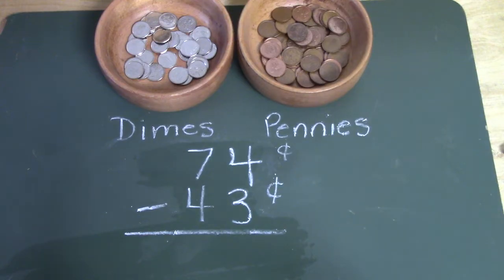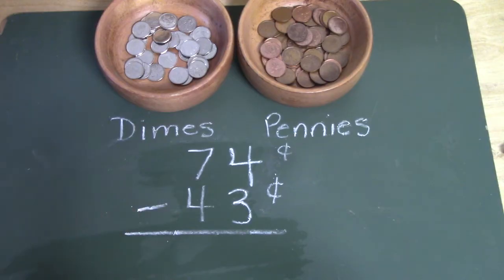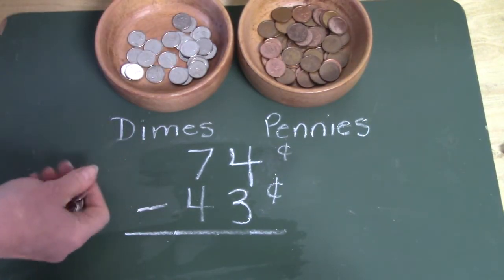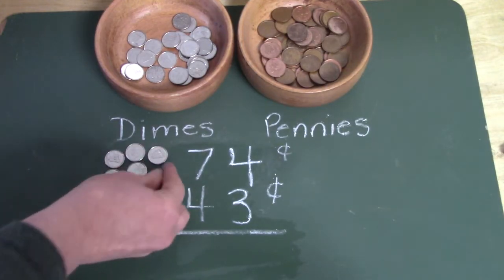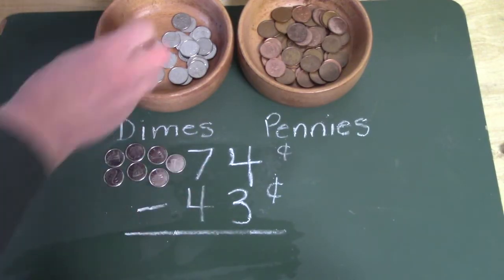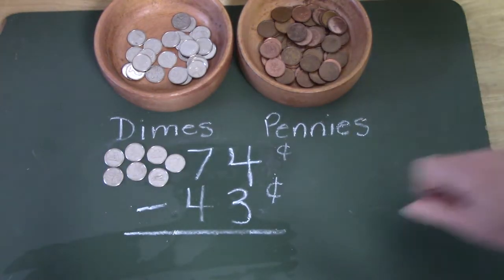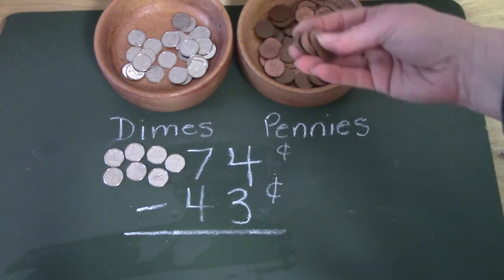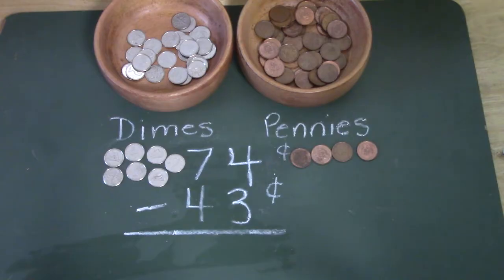All right class, let's try this question. We have 74 cents and we're going to subtract or take away 43 cents. I'm going to get out my coins so I can show 74: 10, 20, 30, 40, 50, 60, 70. I'm putting my dimes over on this side in the tens place, or the dimes place. But I also have four — 74. I'm going to get out four pennies: one, two, three, four. I'm putting them on this side because they're in the ones place, or the pennies place.